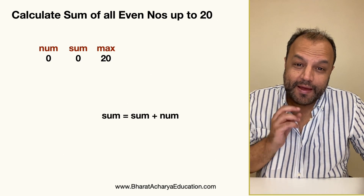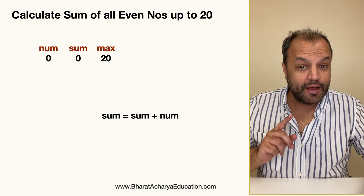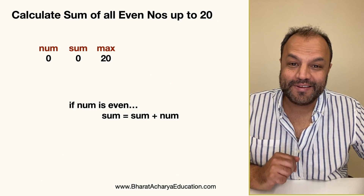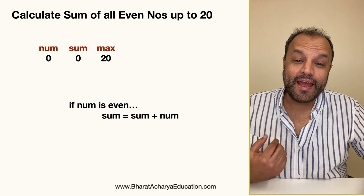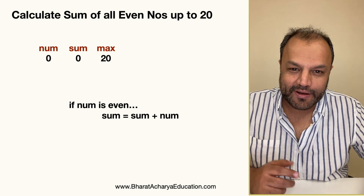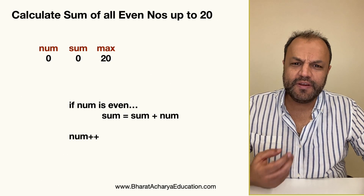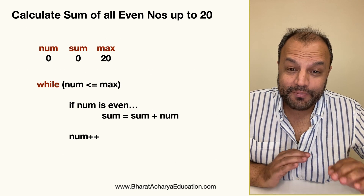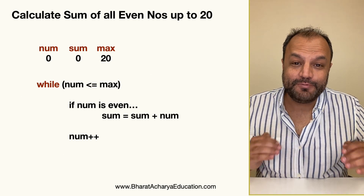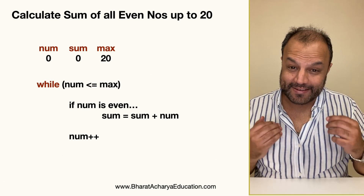You keep adding number to sum — that's how you make your total. Of course you'll do this only if the number is even. Once you've added the number, increment it and move to the next one. Do this in a loop till the time your number is up to 20, which means till the time the number is less than or equal to max.